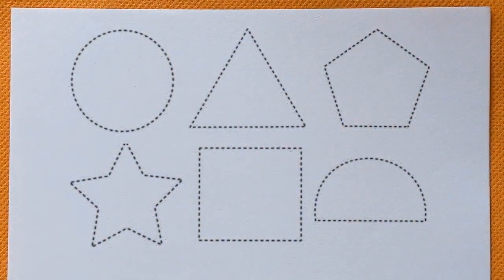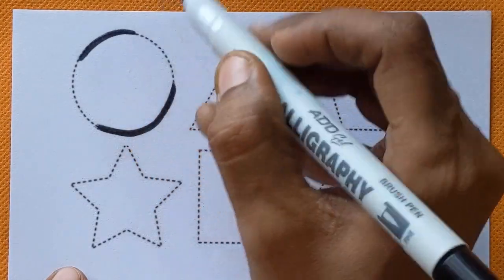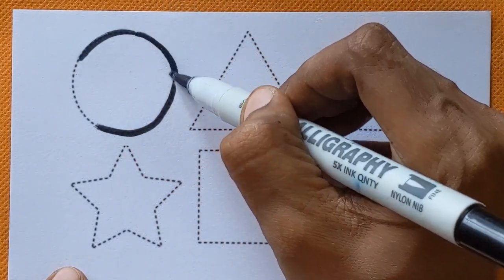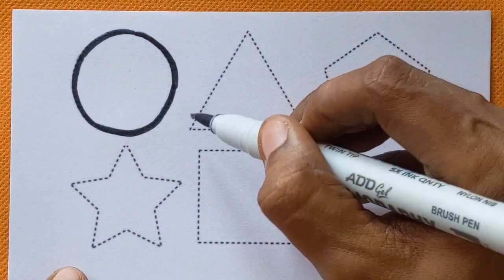At first, we will dress the shapes. Dress the shapes just by following the dots. This is circle shape.